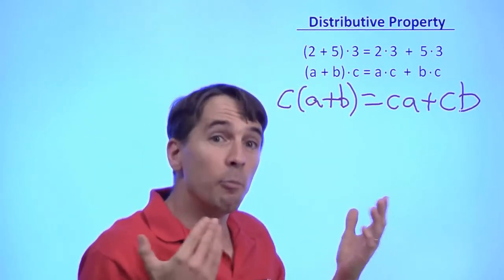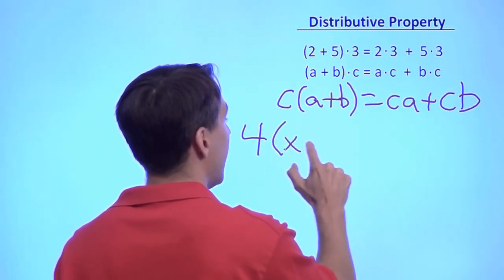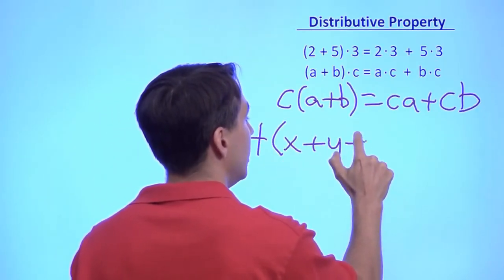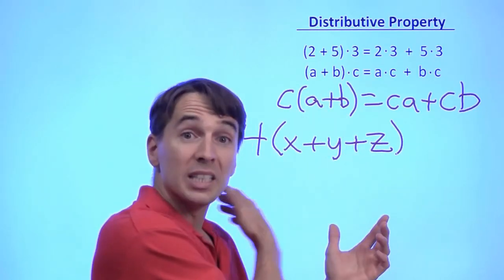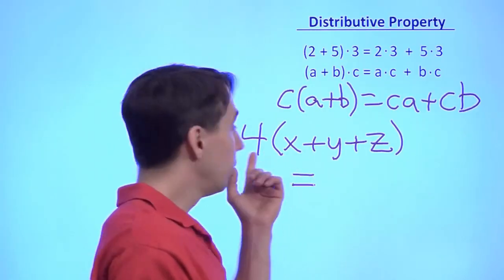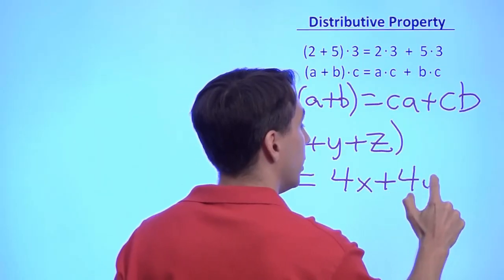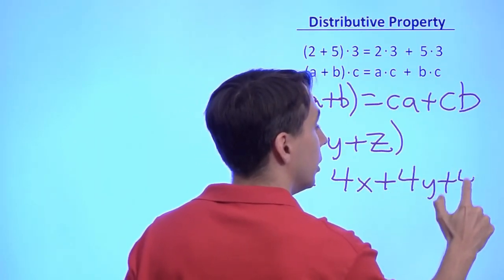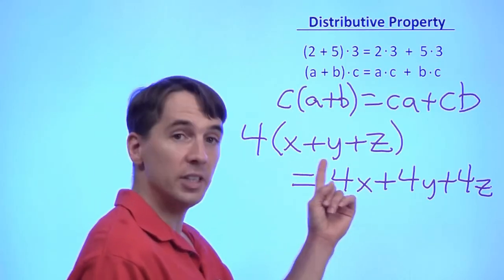And I can even have more terms in the sum. So, for example, if I started with something like four times (x + y + z), I can apply the distributive property to expand this. And we say expand when we multiply it out as 4x plus 4y plus 4z.